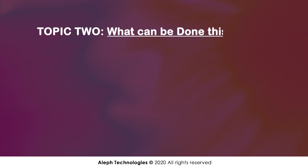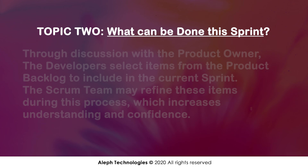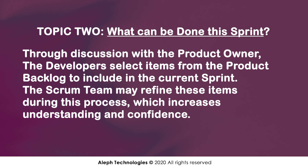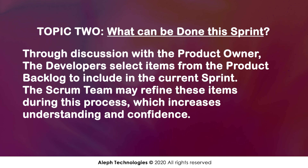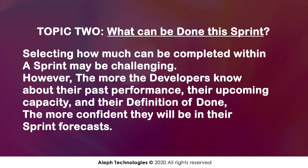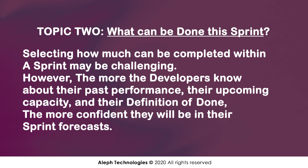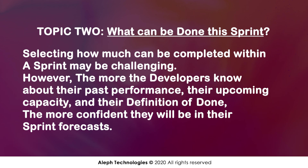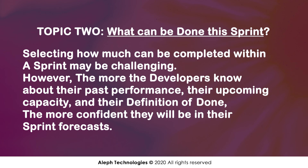Topic 2: What can be done this sprint? Through discussion with the product owner, the developers select items from the product backlog to include in the current sprint. The Scrum team may refine these items during this process, which increases understanding and confidence. Selecting how much can be completed within a sprint may be challenging. However, the more the developers know about their past performance, their upcoming capacity, and their definition of done, the more confident they will be in their sprint forecasts.